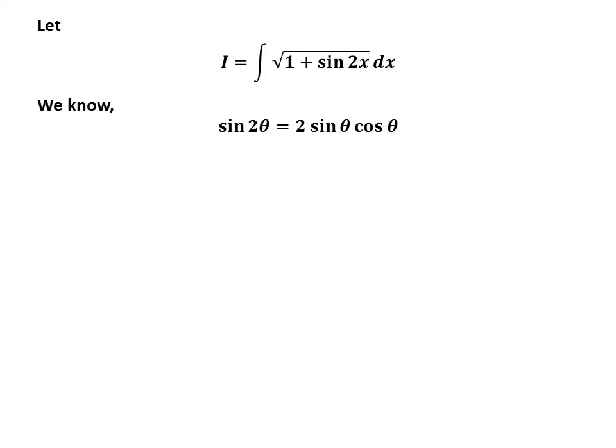We know the famous identity for any angle theta: sine of 2 theta is equal to 2 times sine of theta times cosine of theta. The video card appearing in the upper right corner contains the derivation of the identity. The link of the video has also been mentioned in the description section.